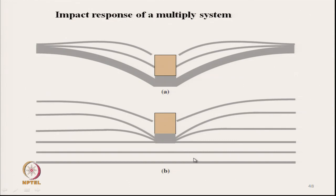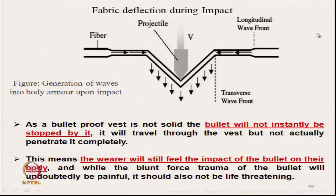As we have seen, impact creates a longitudinal wave whose speed depends on fibre properties. Since a bulletproof vest is not solid, the bullet will not be instantaneously stopped — it will travel through the vest but not completely penetrate it. It will initially penetrate through a few layers but will not penetrate completely. This means the wearer will still feel the impact of the bullet due to deformation, which will be blunt trauma — uncomfortable but not life-threatening.